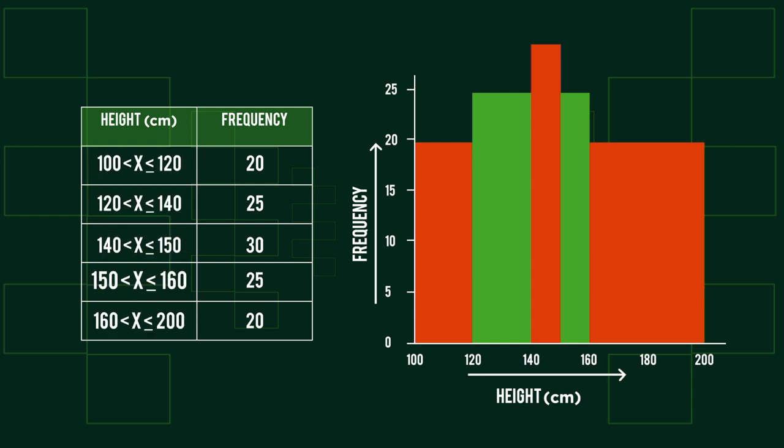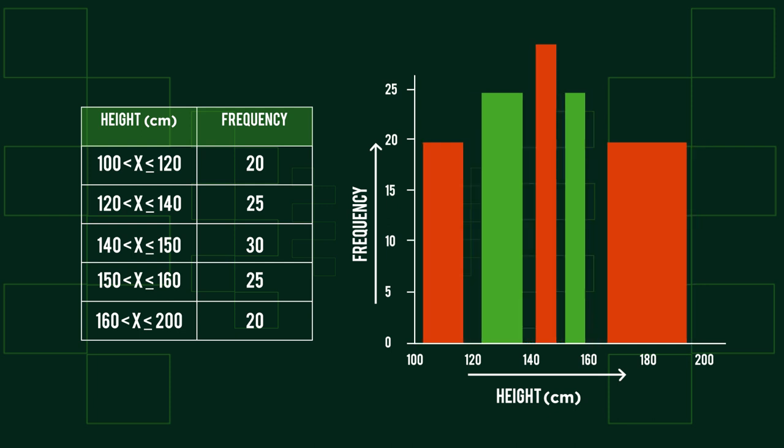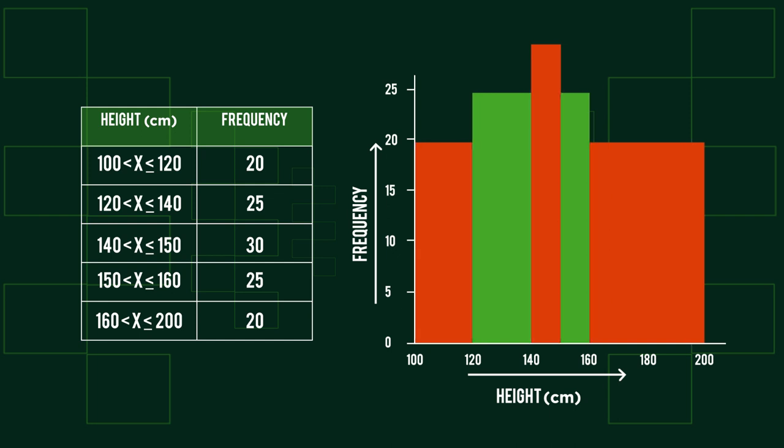Firstly, the data in our table is continuous, meaning that there is a group for every value, including non-integers within the range of 100 and 200. Bar charts are not used for continuous data because they require gaps between the bars and gaps don't work for continuous values. The second problem is that the group 150 to 160 has the same height as 120 to 140, even though it represents a smaller range. This, therefore, does not give us a true comparison of the data.